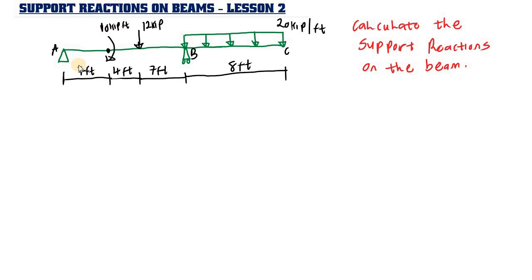What you need to do is make an assumption on the direction of these forces. We are going to assume all vertical forces acting upward, while the horizontal force is acting to the right. If we have a positive value, our assumption is correct. If we have a negative value, our assumption is wrong and they are acting in the opposite direction.